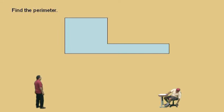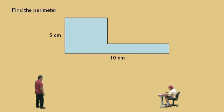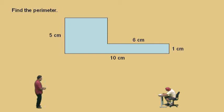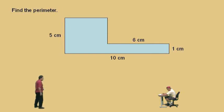Now, if you're using the worksheet at home, you will have these sides labeled as such: 5 centimeters there, 10 centimeters there, 1 centimeter there, and that step right there is 6 centimeters. Finding the perimeter means we have to sum up all those side lengths of our shape. We've got to go 5 plus 10 plus 1 plus 6, but we've got to find those missing lengths.